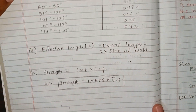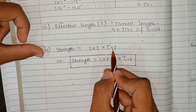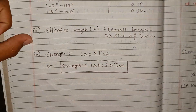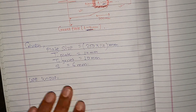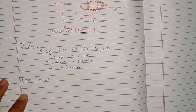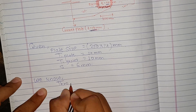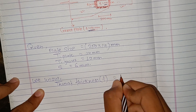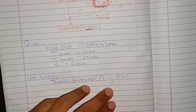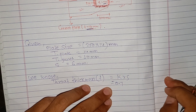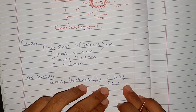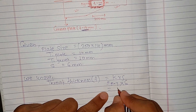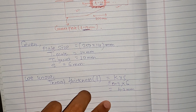The next step uses overall length. The throat thickness — for a 60–90 degree fillet weld, the factor is 0.7. So throat thickness equals 0.7 × s, where s = 6 mm, giving throat thickness = 0.7 × 6 = 4.2 mm.